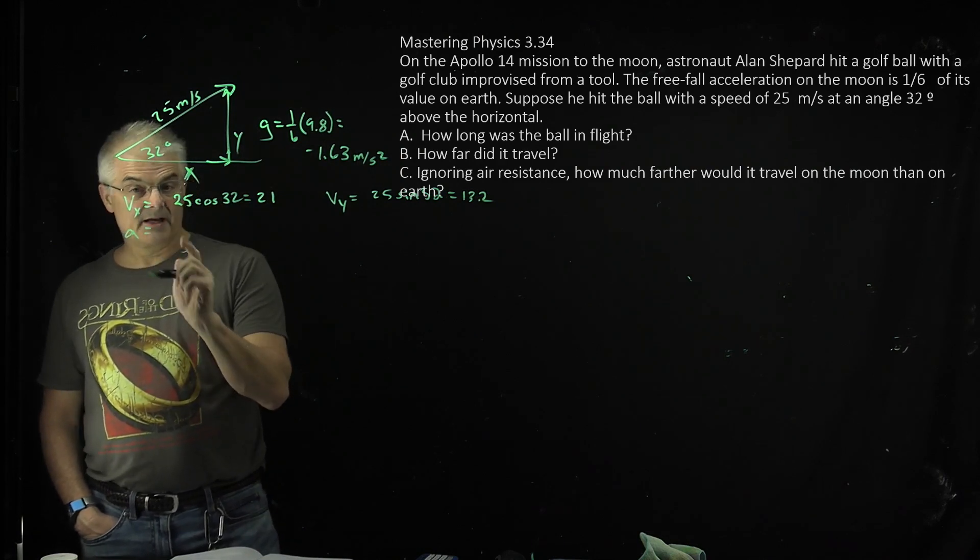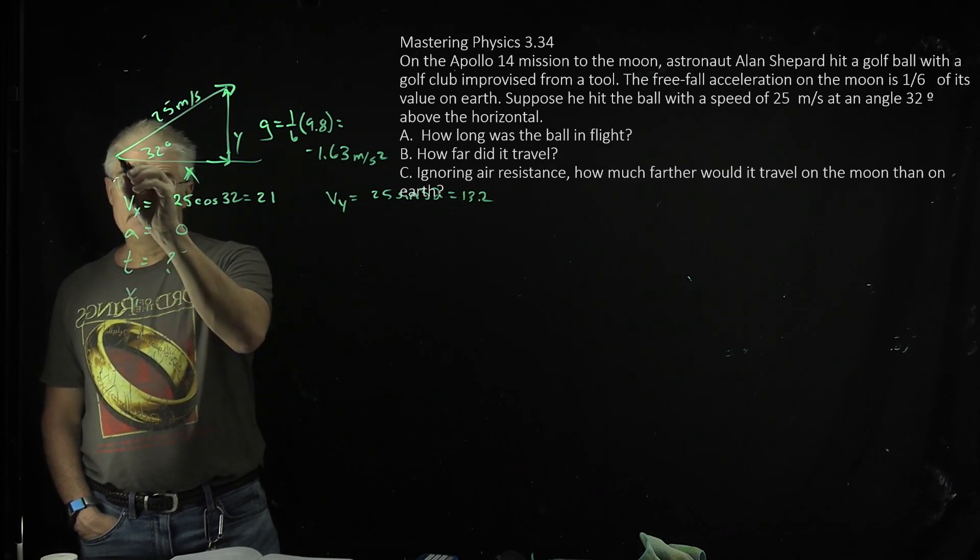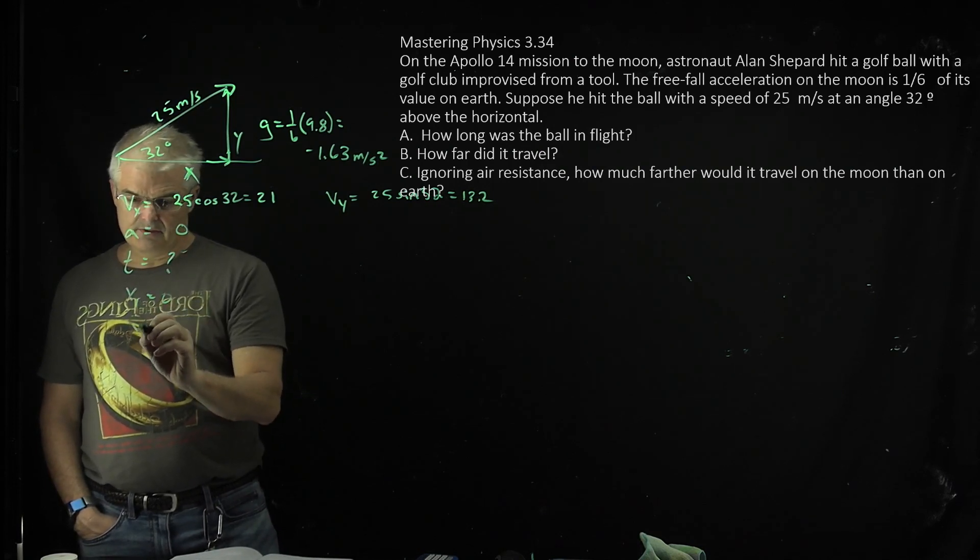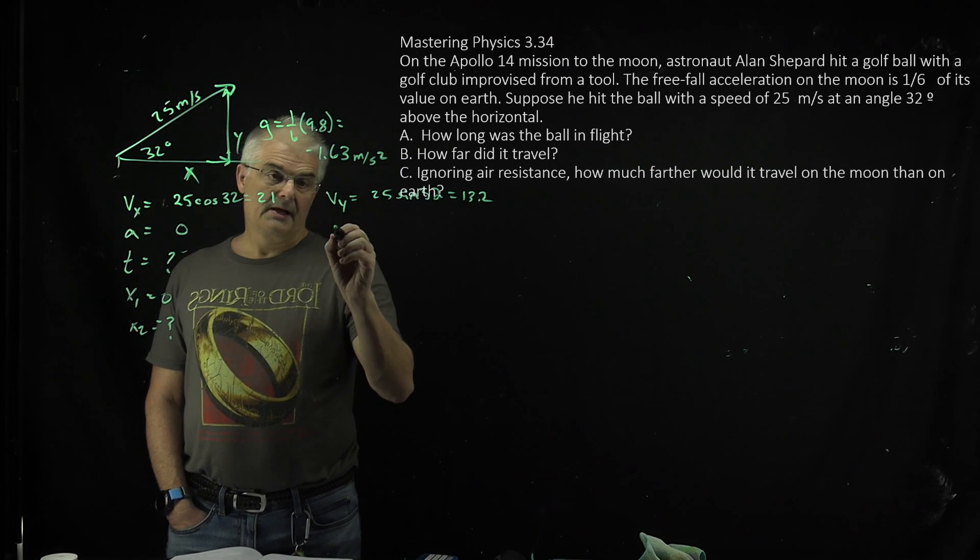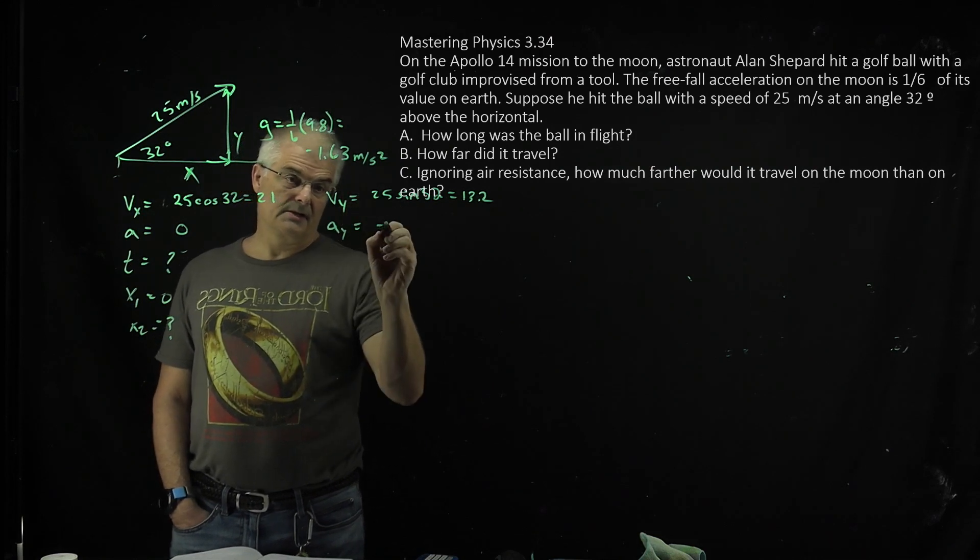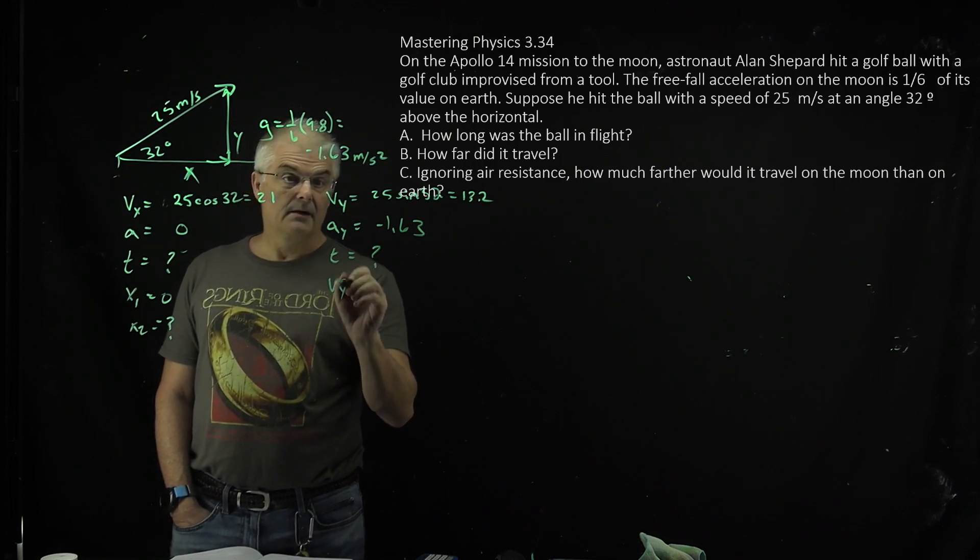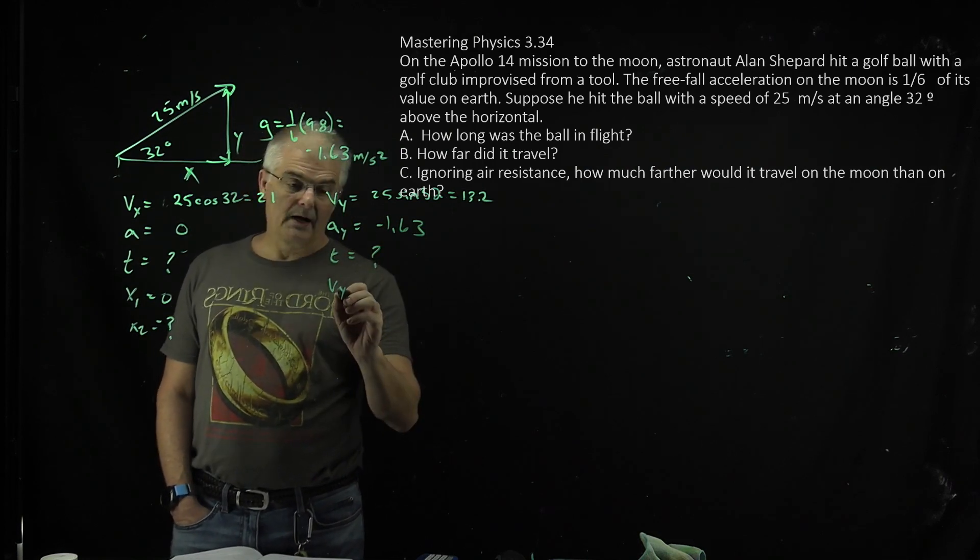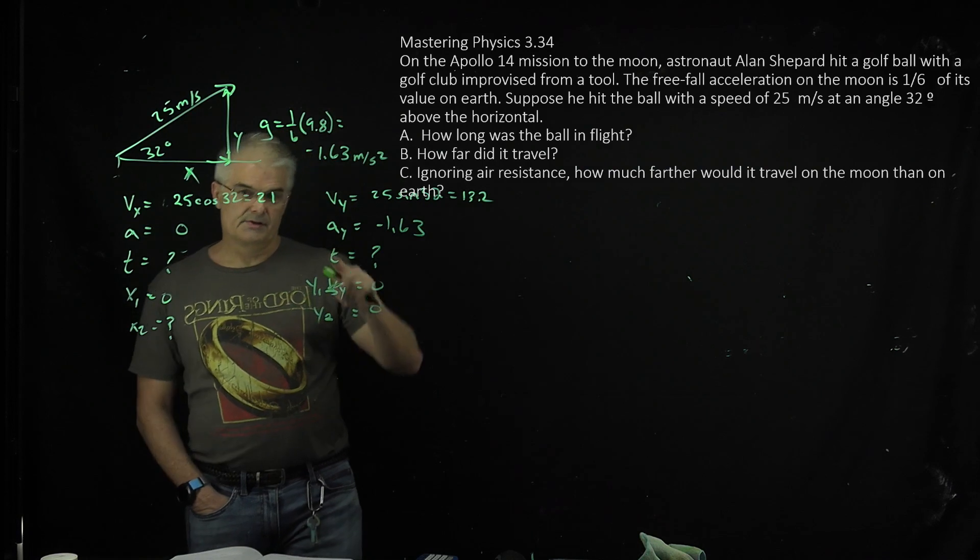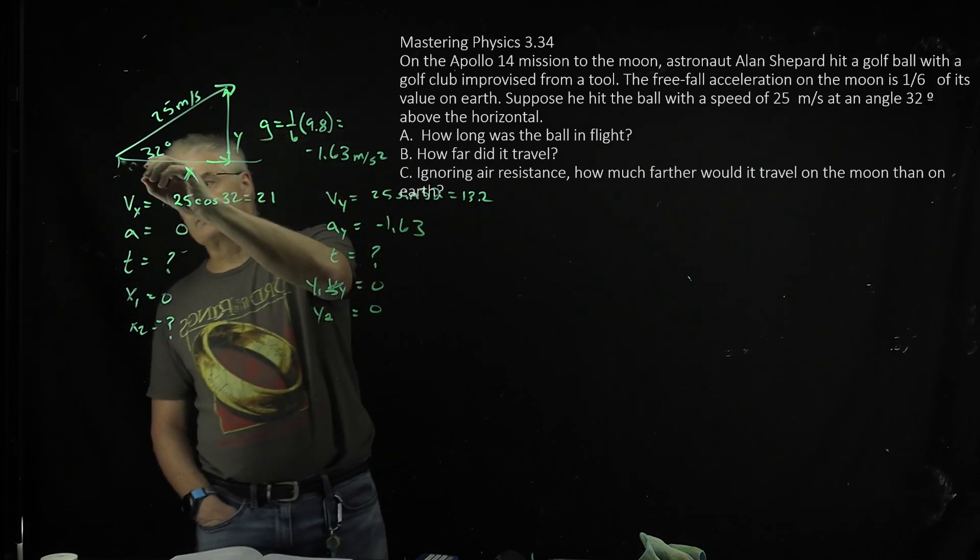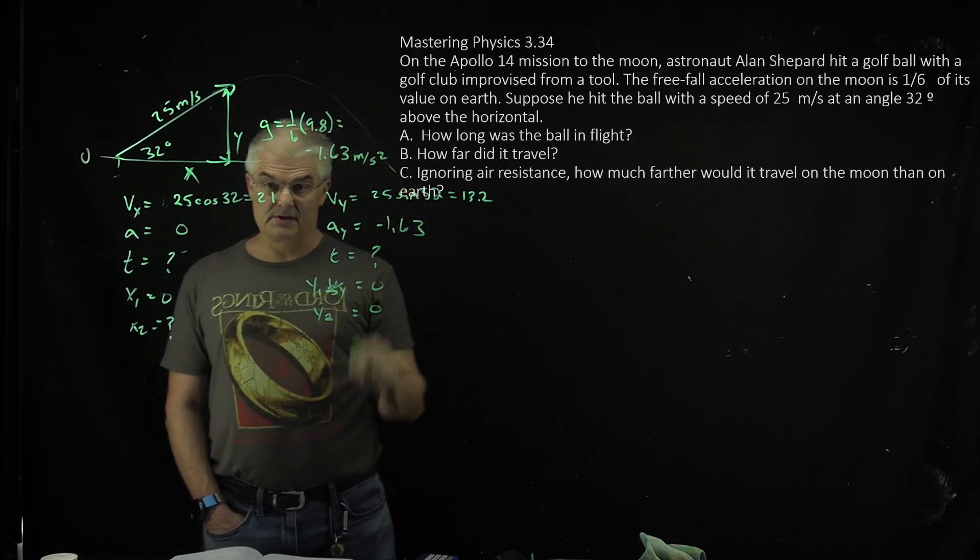Acceleration in the x direction is 0, right? T, we're solving for that. x1 equals 0. x2 equals question mark. Notice what we're doing is we're putting down all our variables, and then we can solve this. A in the y direction is negative 1.63. T, we don't know. vy, we already have vy. y1 is 0, and y2 actually equals 0, because it's arcing, right? As he shoots it, this is y equal to 0. It's going to arc and then land back on level ground. We're assuming this is level ground. So how long was the ball in flight?